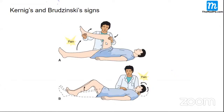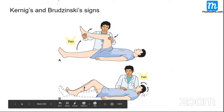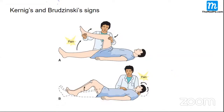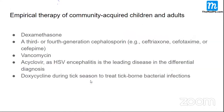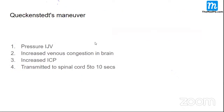In the Kernig sign, when you flex the hip and try to extend the knee, you get a spasm — that is called the Kernig sign. The Brudzinski sign is when you try to bend the neck, there is a flexion of the hip. These are the signs of meningeal irritation.